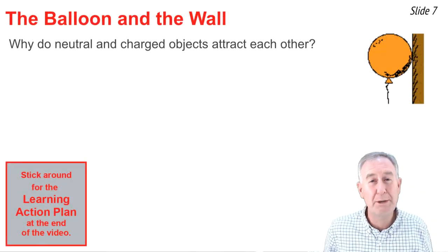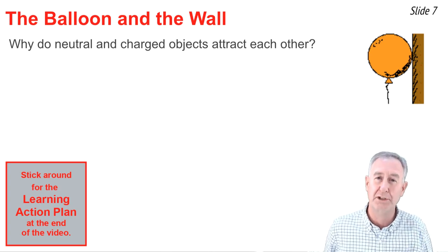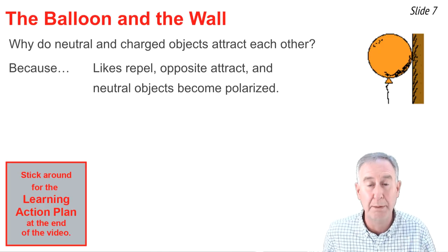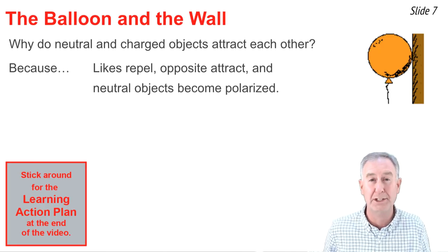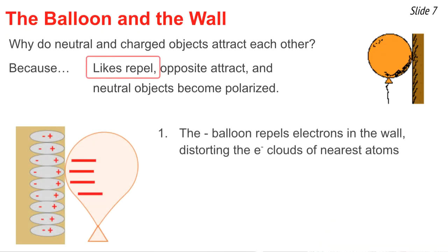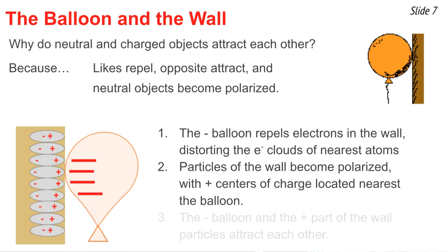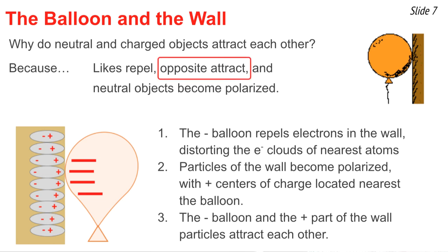So now we're back to the original demonstration of the balloon and the wall attracting one another. Why do charged and neutral objects attract? Our answer is: because likes repel, opposites attract, and neutral objects can become polarized. When you charge a balloon negatively and bring it near a wall, the negative balloon repels the electrons in the atoms on the outside of the wall, distorting their electron clouds. The result is that the particles of the wall become polarized, with the center of positive charge located nearest the balloon. Now we have the negative balloon and the positive part of the wall particles attracting each other. That's why neutral and charged objects attract one another.